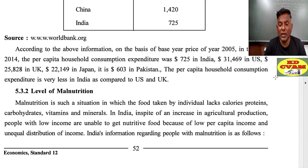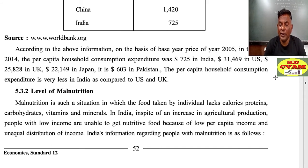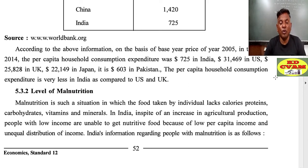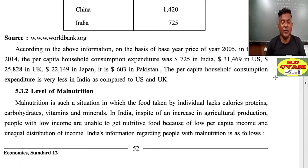The second indicator is the level of malnutrition. Malnutrition is a situation in which the food taken by an individual lacks calories like proteins, carbohydrates, vitamins, and minerals. In India, in spite of an increase in agricultural production, people with low income are unable to get nutritive food because of low per capita income and the unequal distribution of income.